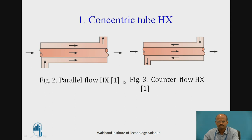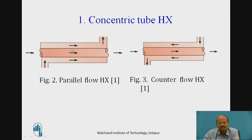In the first type of heat exchanger, the two tubes are concentric. If the fluid flow direction is the same for both fluids, this is known as a parallel flow heat exchanger. If the hot fluid flows in one direction and the cold fluid flows in the opposite direction, this is known as a counter flow heat exchanger.